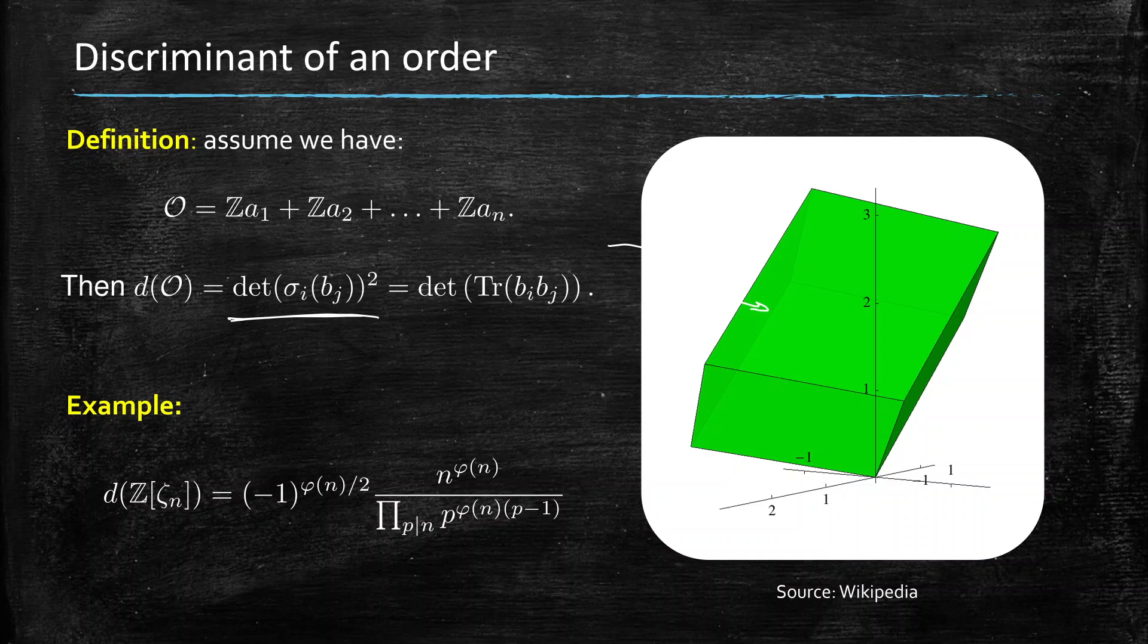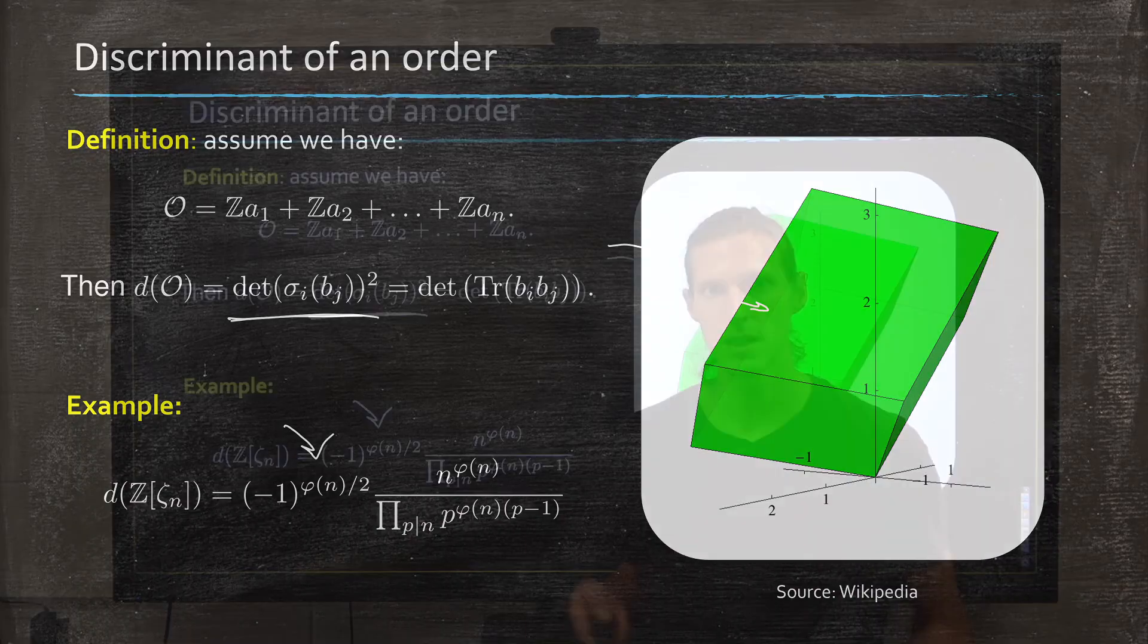So here, as an example, I'm giving you the formula for the discriminant of the order of a cyclotomic field, Z of zeta n. So some of the time we know exactly, it's very easy, as a matter of fact always easy to calculate, and is actually given to us by determinants.